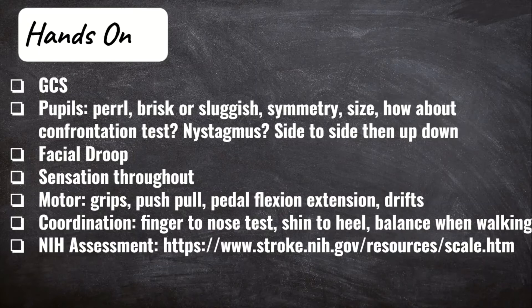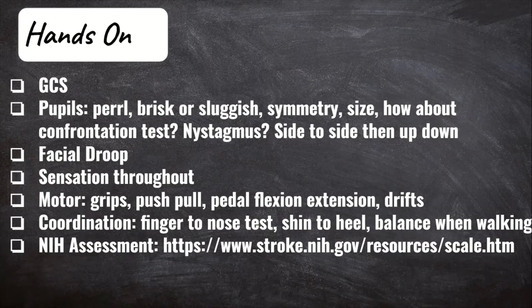I'll have them follow my finger in a side-to-side motion, then up and down — looking for nystagmus and whether the patient can actually do it. I'll have them close one eye, focus with the other on my nose, and place fingers in each of the four quadrants, having them tell me how many fingers I'm holding up. I'll do this again with both eyes. Even though I already looked for a facial droop with my visual assessment, here I'll ask them to smile and show their teeth, and lift both eyebrows, looking for symmetry.